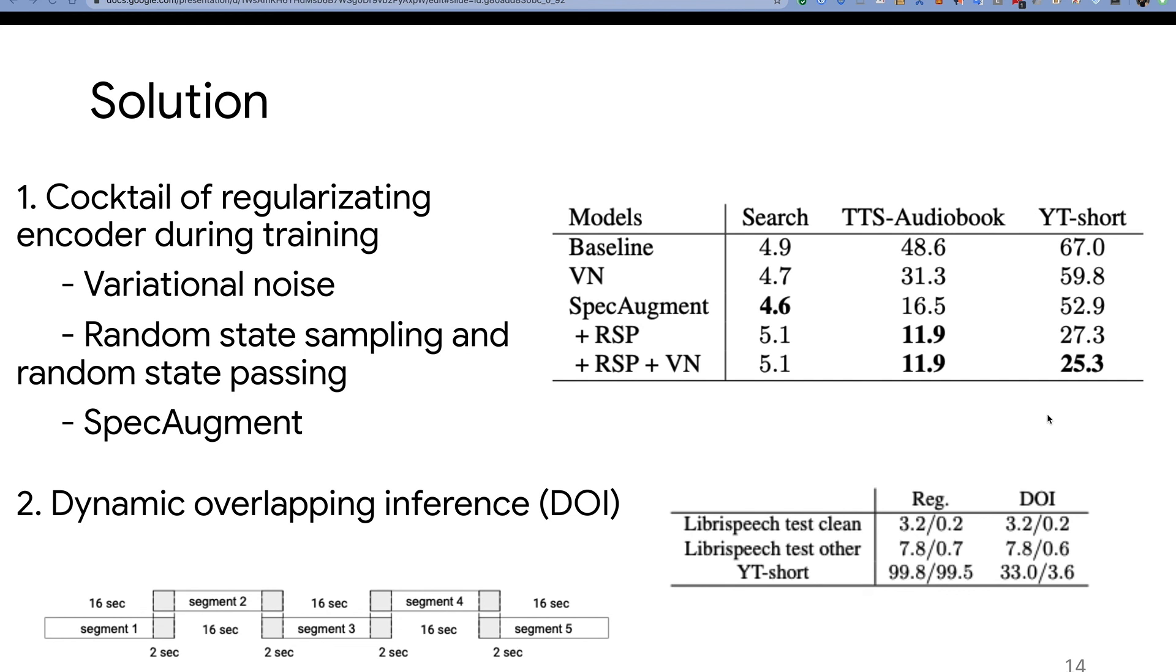Another technique we found very useful is called dynamic overlapping inference. We split audio into short durations, for example, 16 seconds with small overlap, recognize the audio, and then map them together. This measure can work very reliably and reduce the word error rate too.